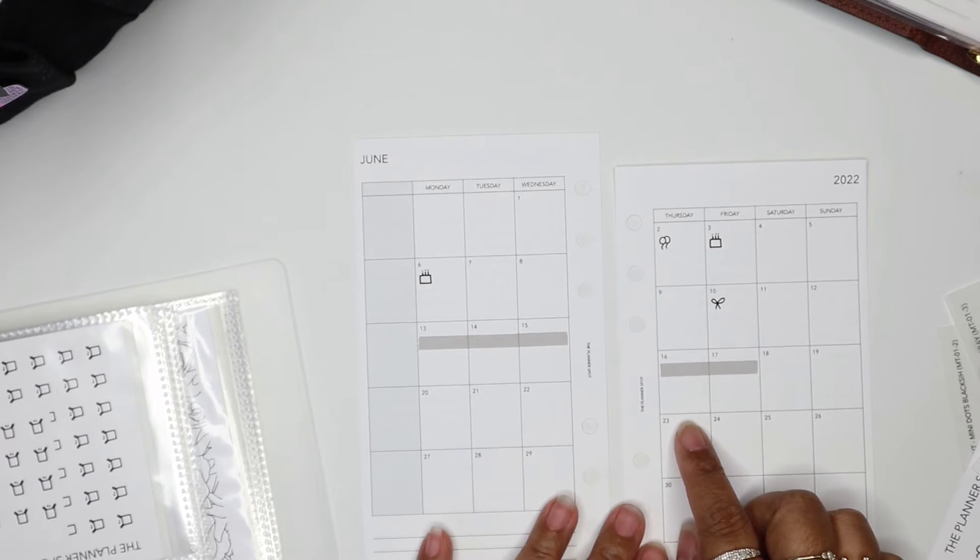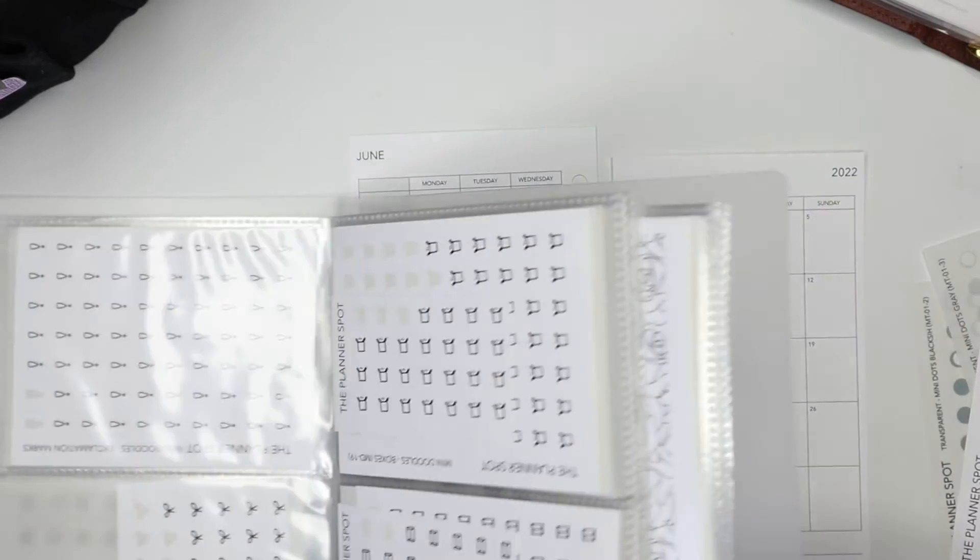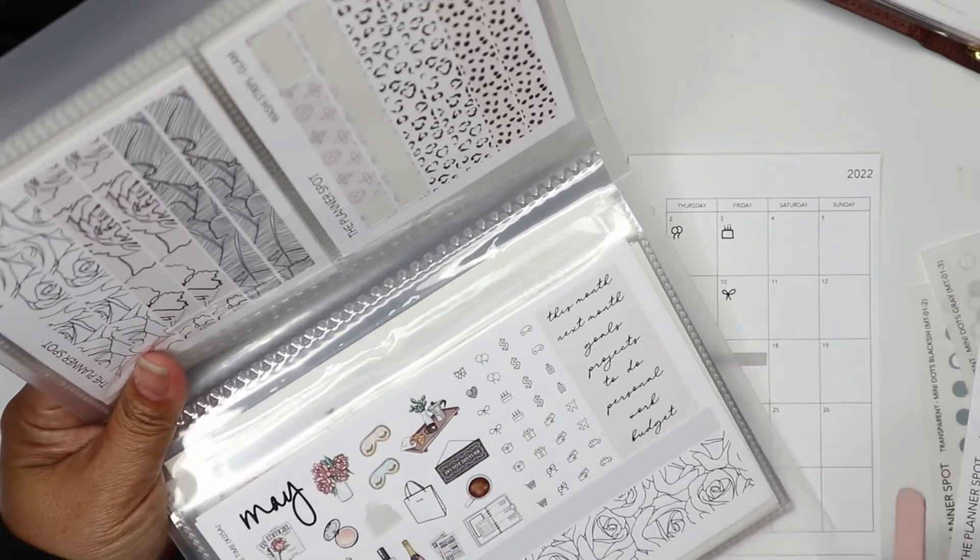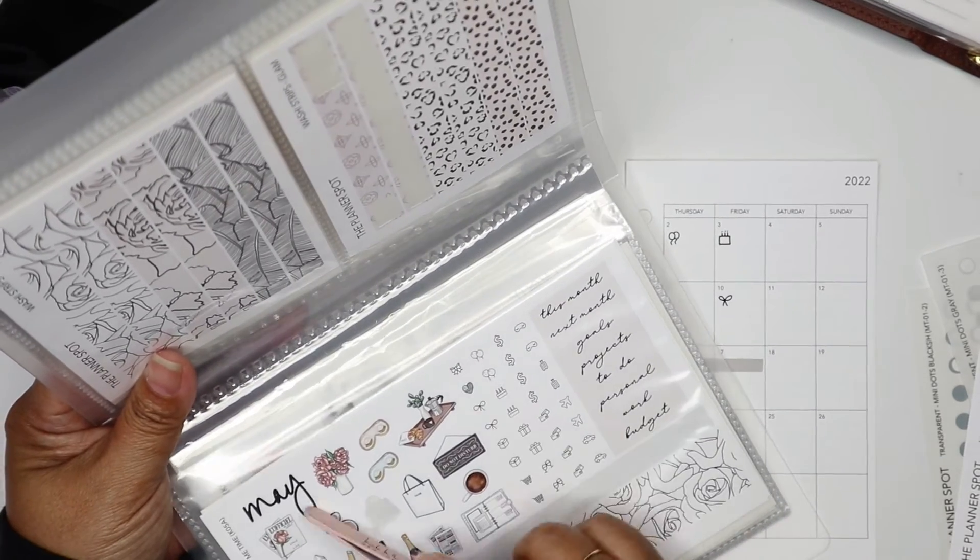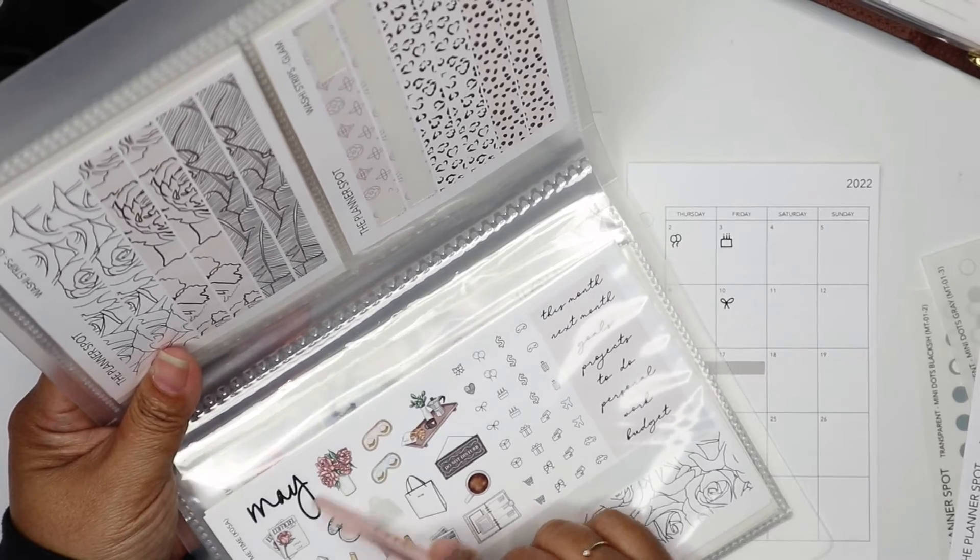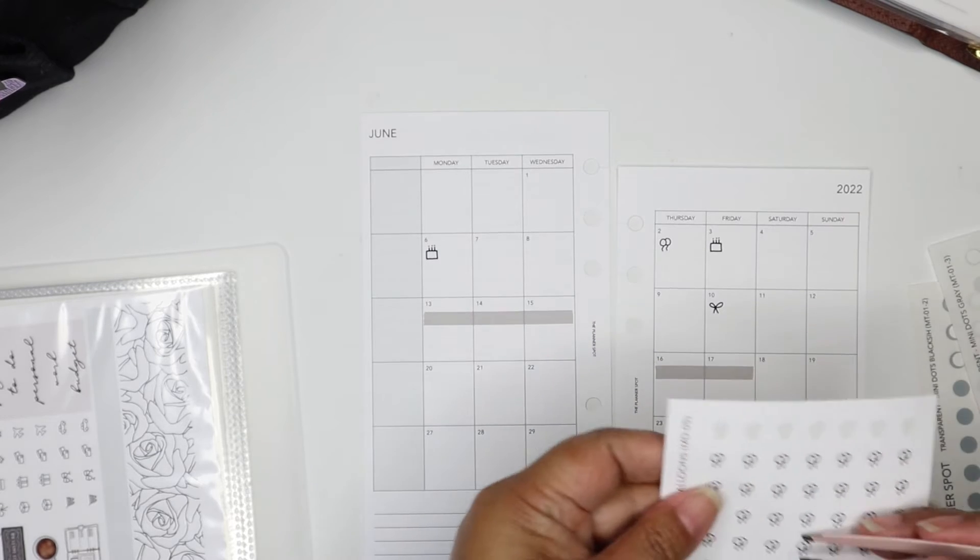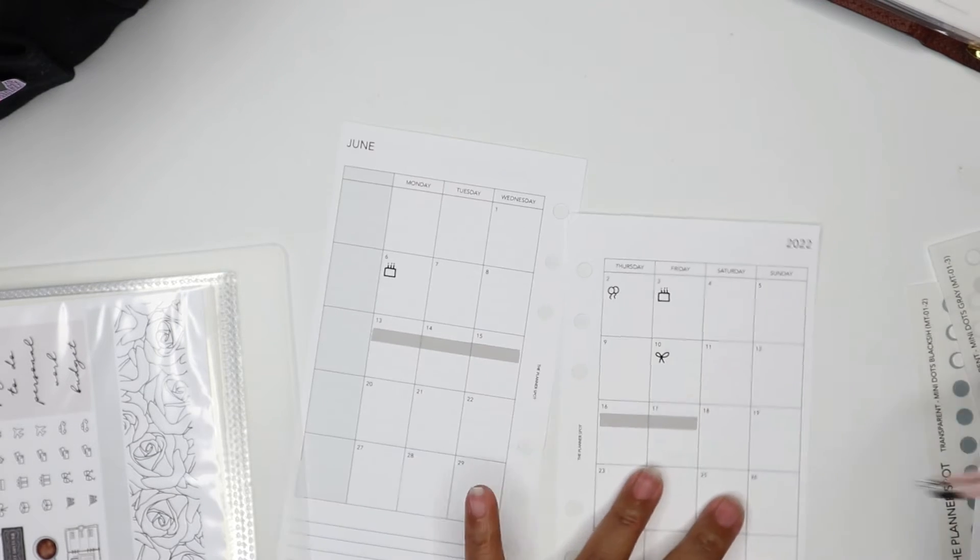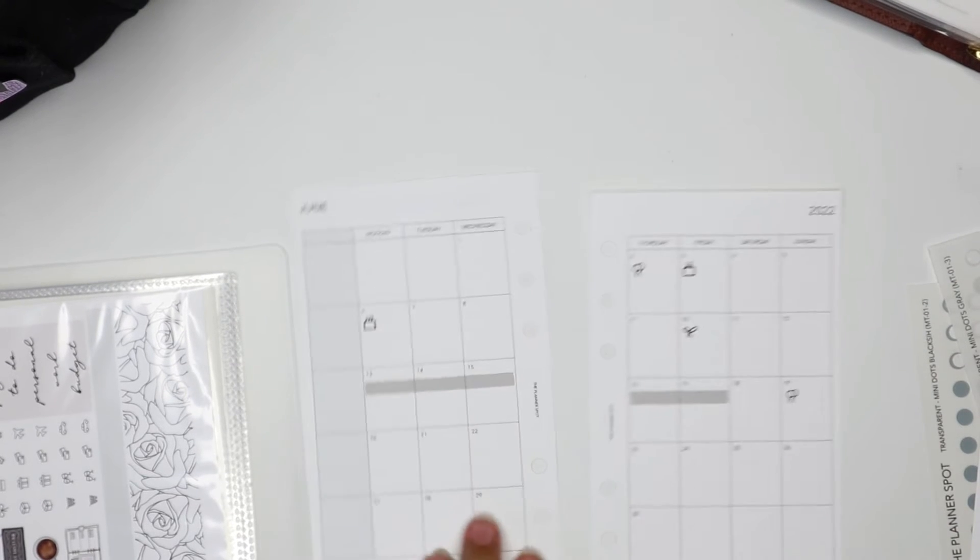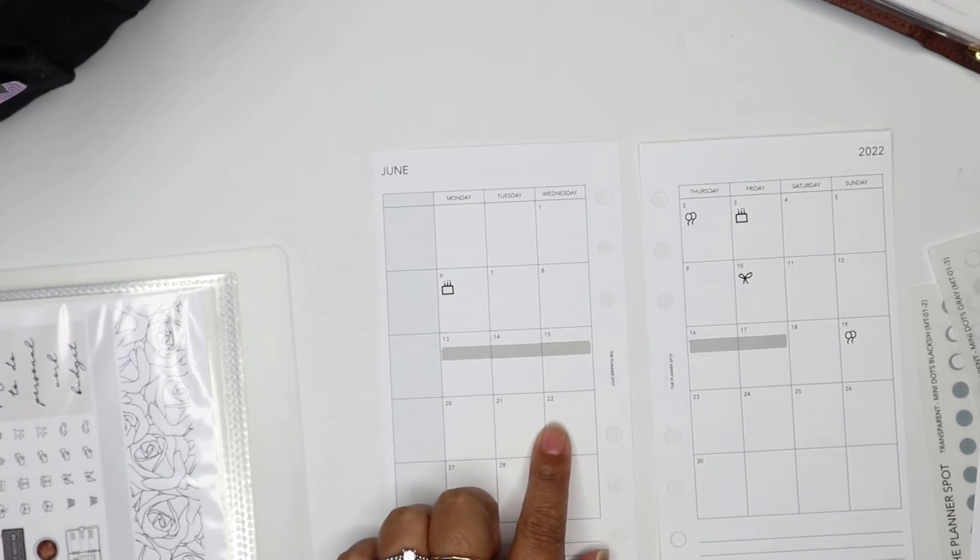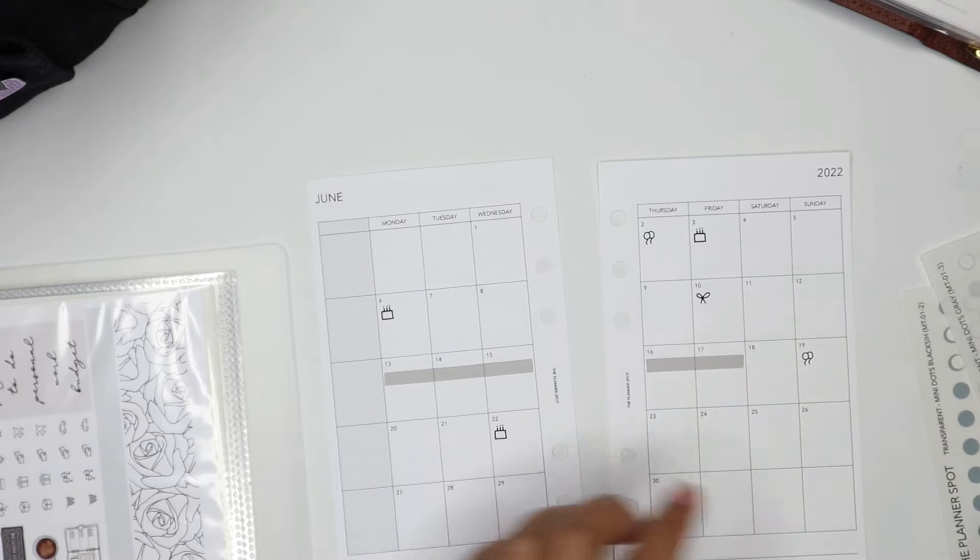So then we have Father's Day on the 19th. I think I'll put these balloons. This is where I struggle with using circle icons or doodles because for the doodles we don't have holiday doodles. But since I'm doing doodles, I'm going to use balloons. I use balloons for any kind of occasion or celebration, and I've been using cakes for birthdays. And then another birthday on the 22nd, and then we have a quinceañera on the 25th.